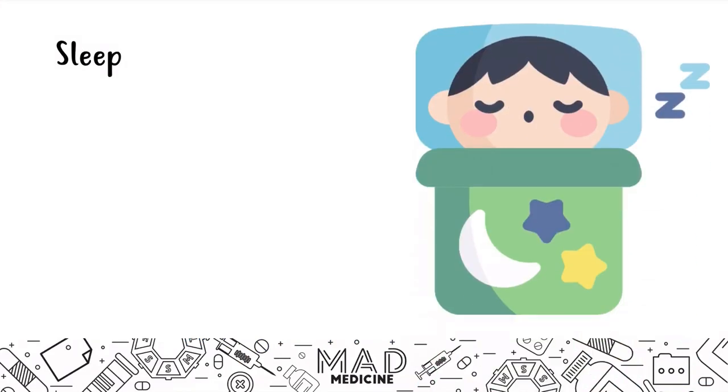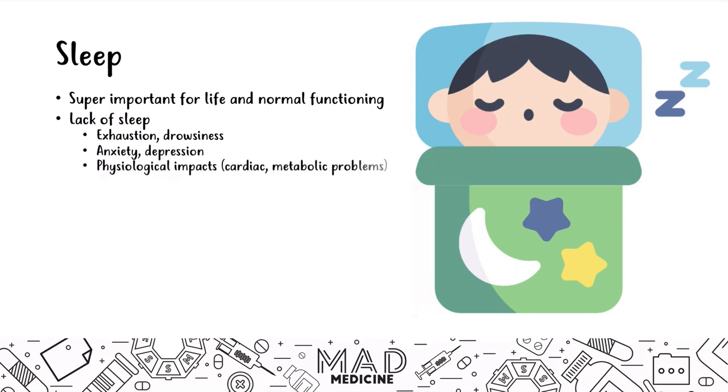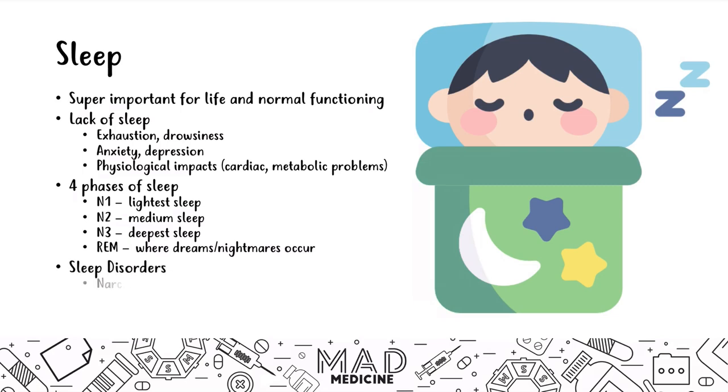Sleep is very important. You need it for normal day-to-day function, and a lack of sleep can lead to many different things like exhaustion, depression, and anxiety, as well as physiological problems like cardiac and metabolic issues. Now, there are four main phases of sleep that you need to know: N1, N2, N3, and REM sleep.